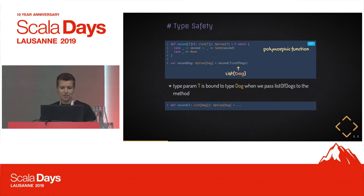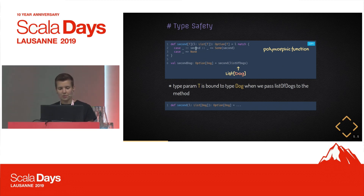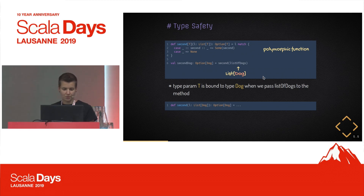One more example: again we have a container of a specific type, and when we call a polymorphic method that operates on a type T — on line six here — when we call the method `second` with a list of dogs, this type parameter will be bound to Dog. For this reason we know that the result of this method call will be an Option of Dog. The type parameter that is free in the example above will be bound to the type Dog when you call the method.